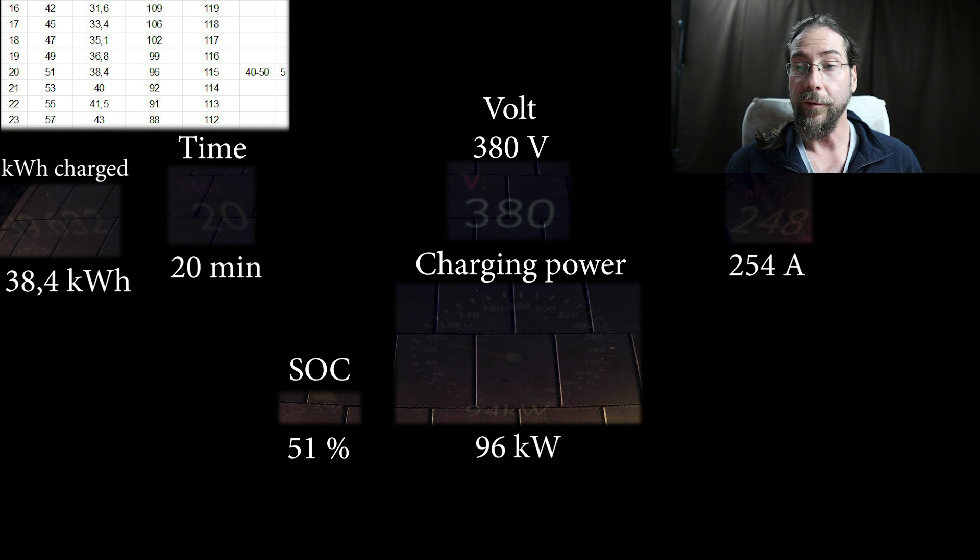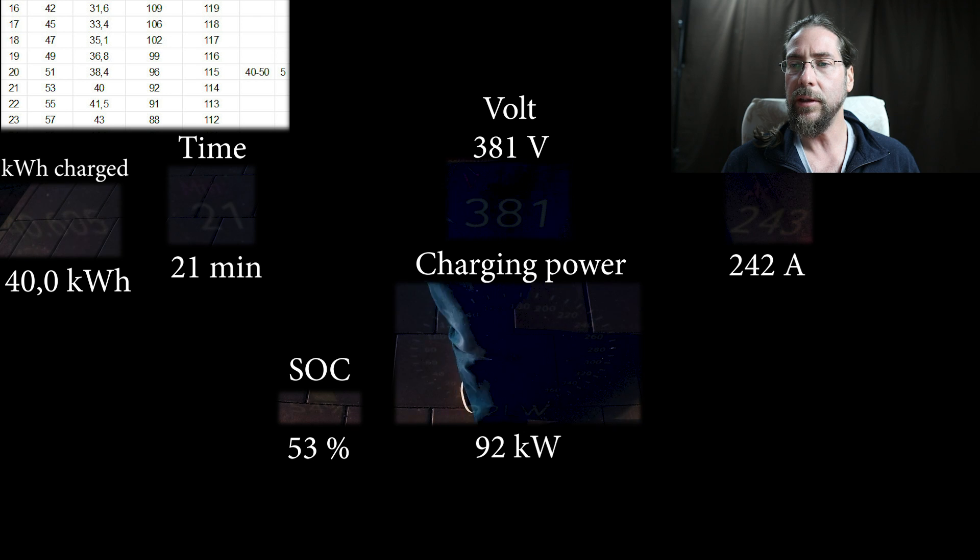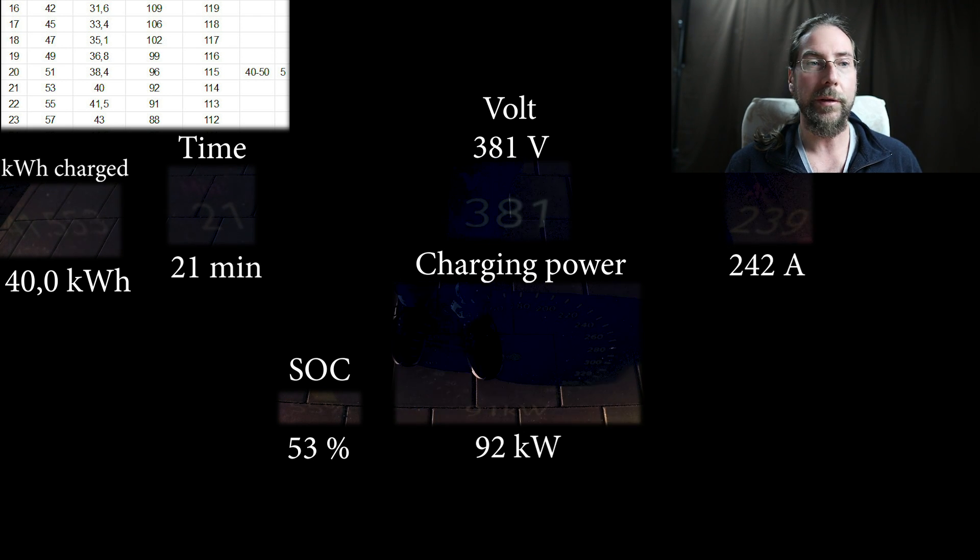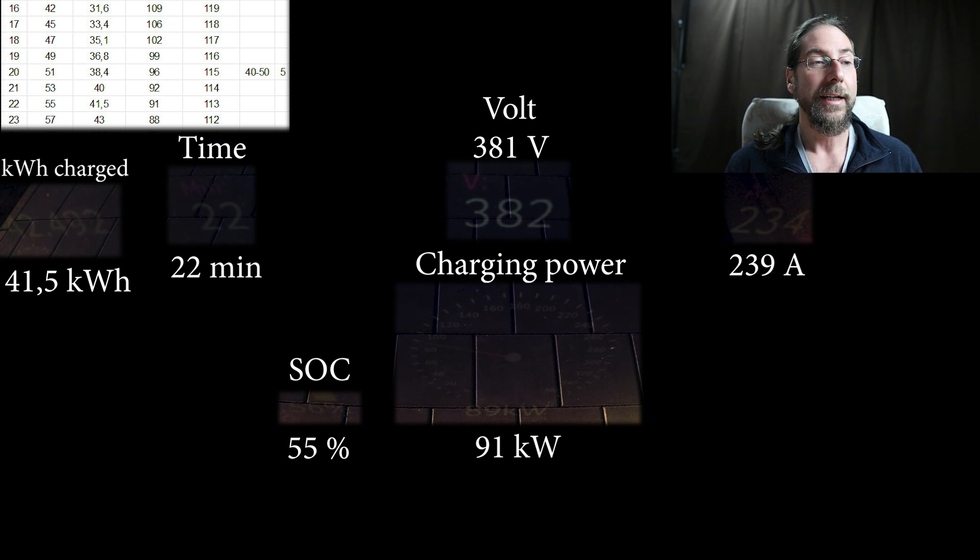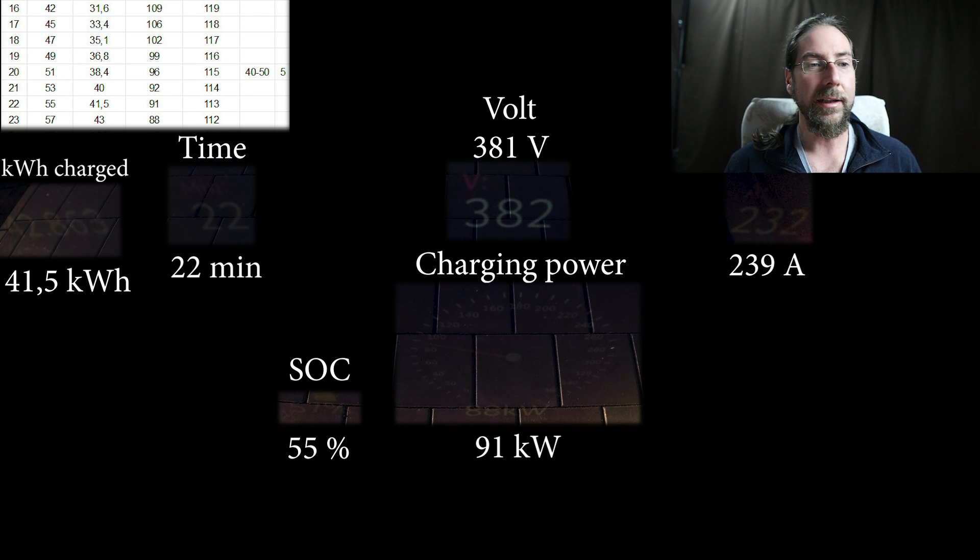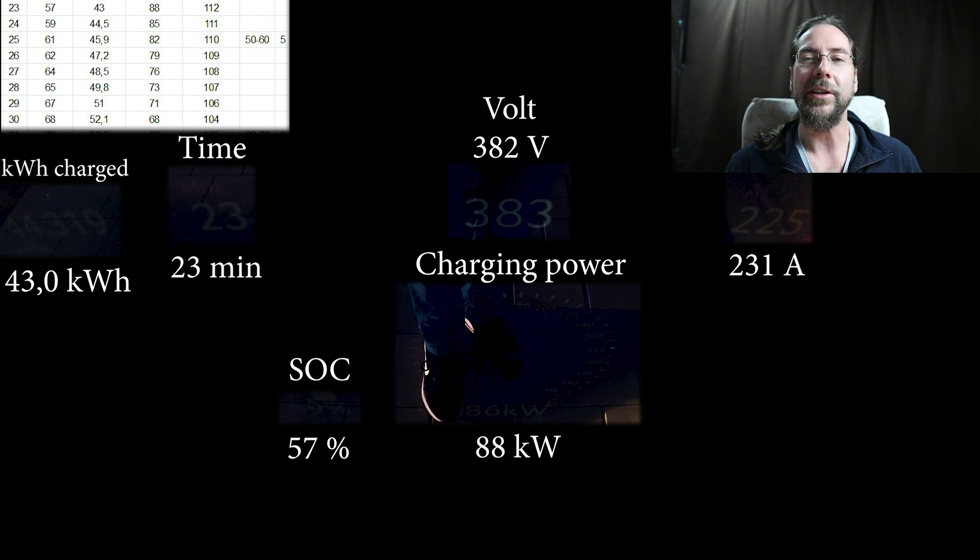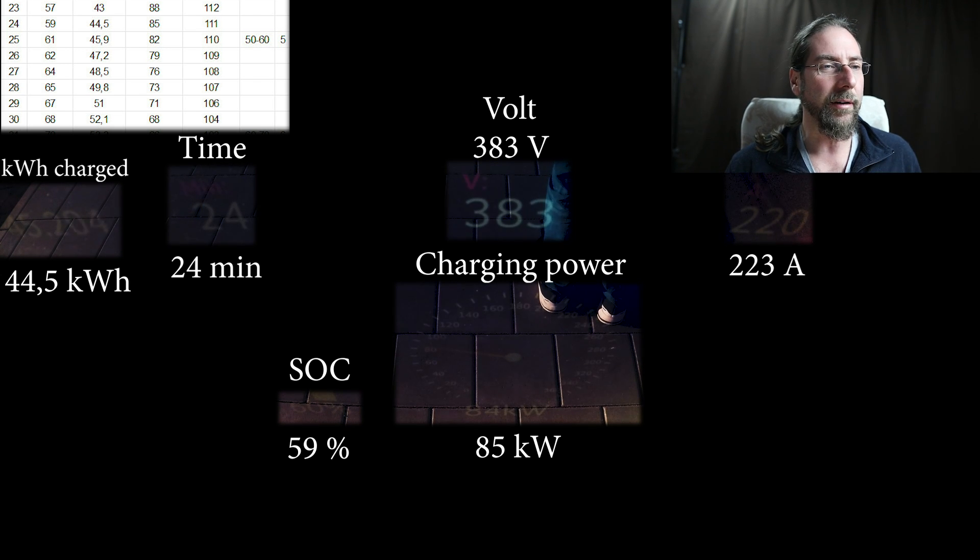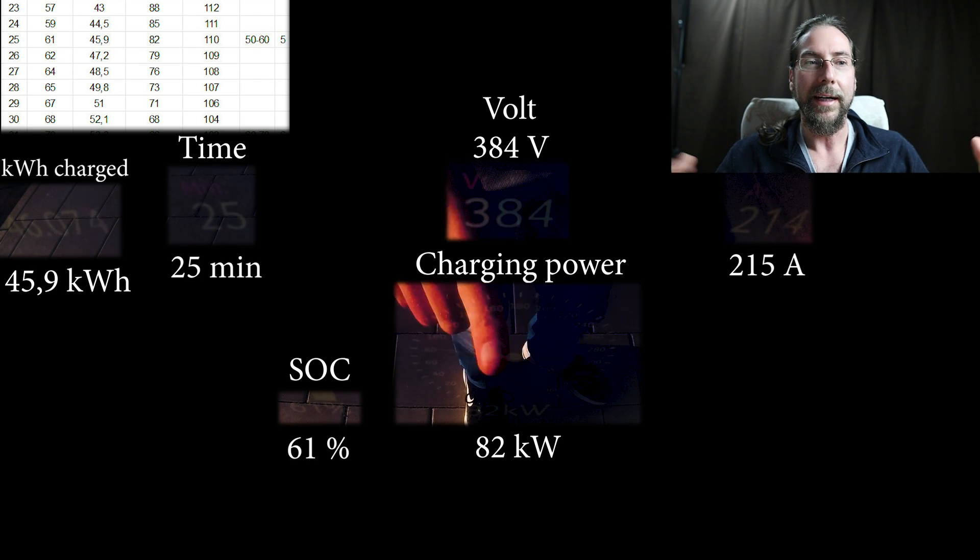After 20 minutes we have 38.4 kilowatt hours charged. So 40 to 50 percent also took five minutes, 50 to 60 will take also five minutes. We have 92 kilowatts now at 53 percent. After 22 minutes we are at 55 percent, 41 and a half kilowatt hours charged. It's still at 91 kilowatts, 382 volts, 231 amps. Soon the picture will get better because it got dark. Ionity is not good when it's really bright and the sun is shining on it, it's just hard to film.